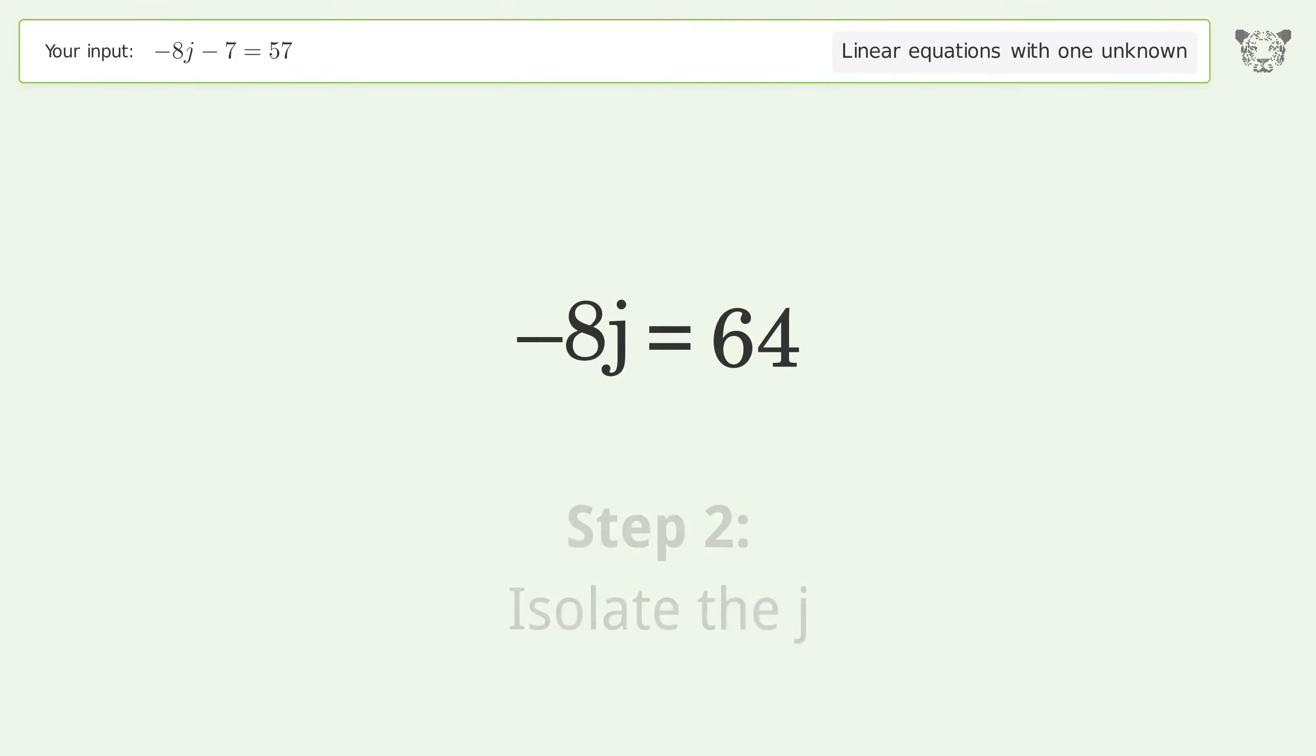Isolate the j. Divide both sides by negative 8. Cancel out the negatives.